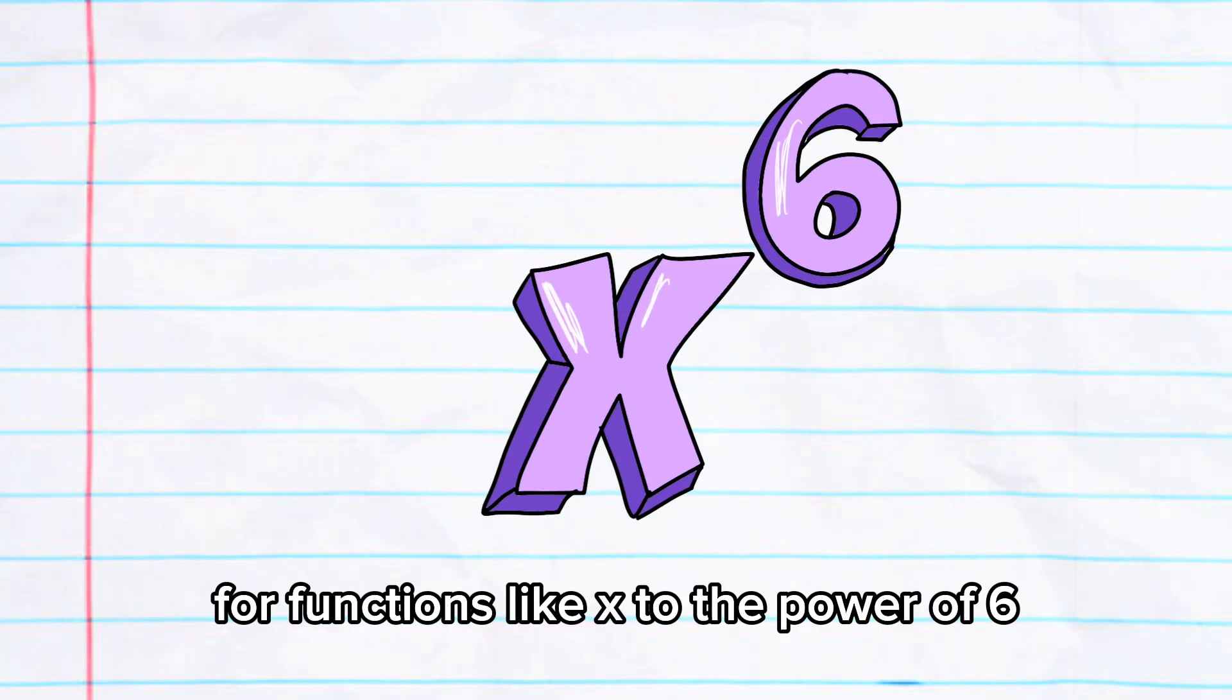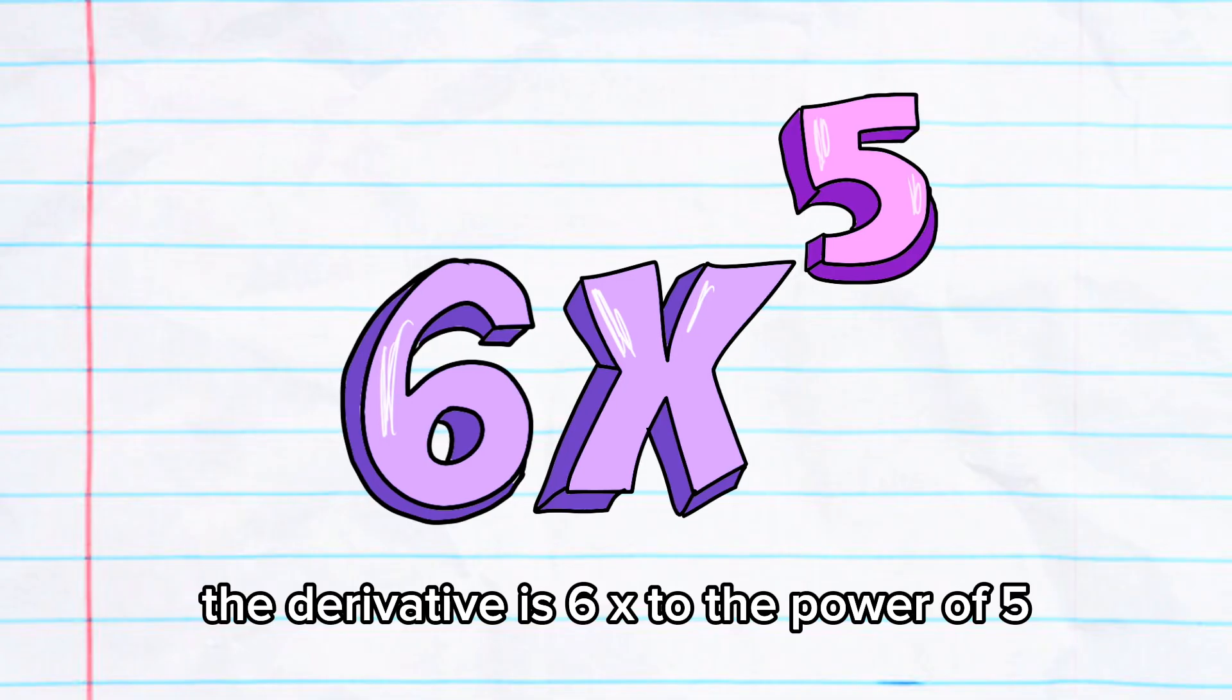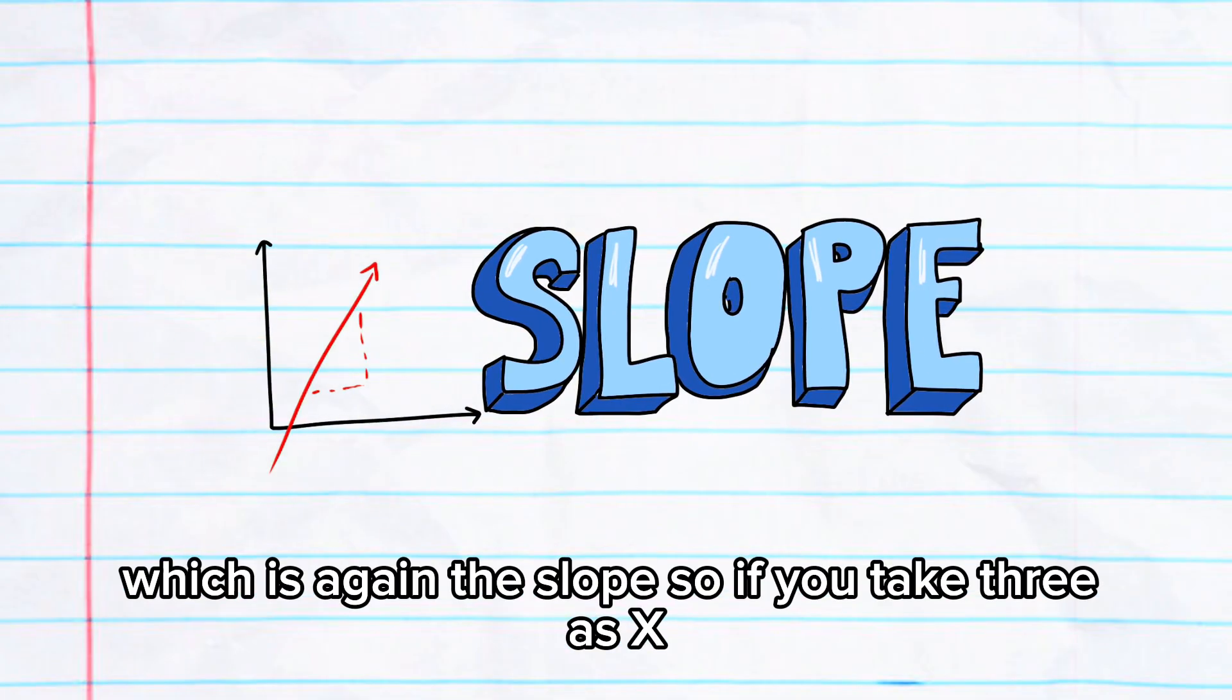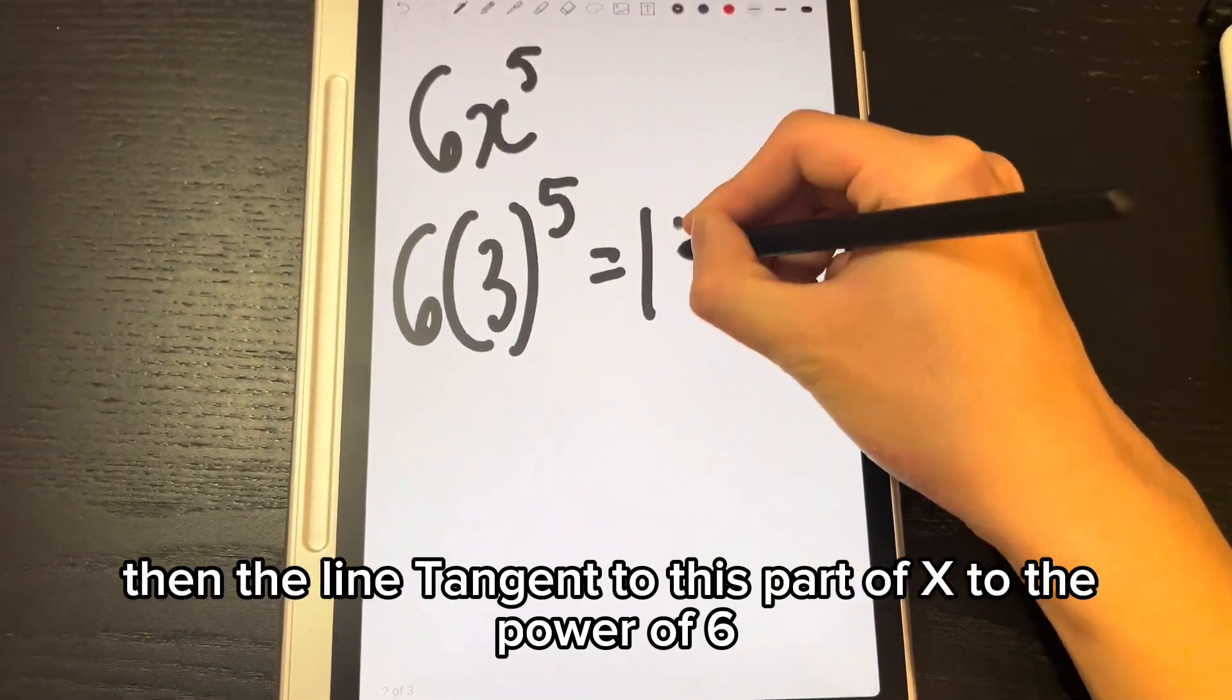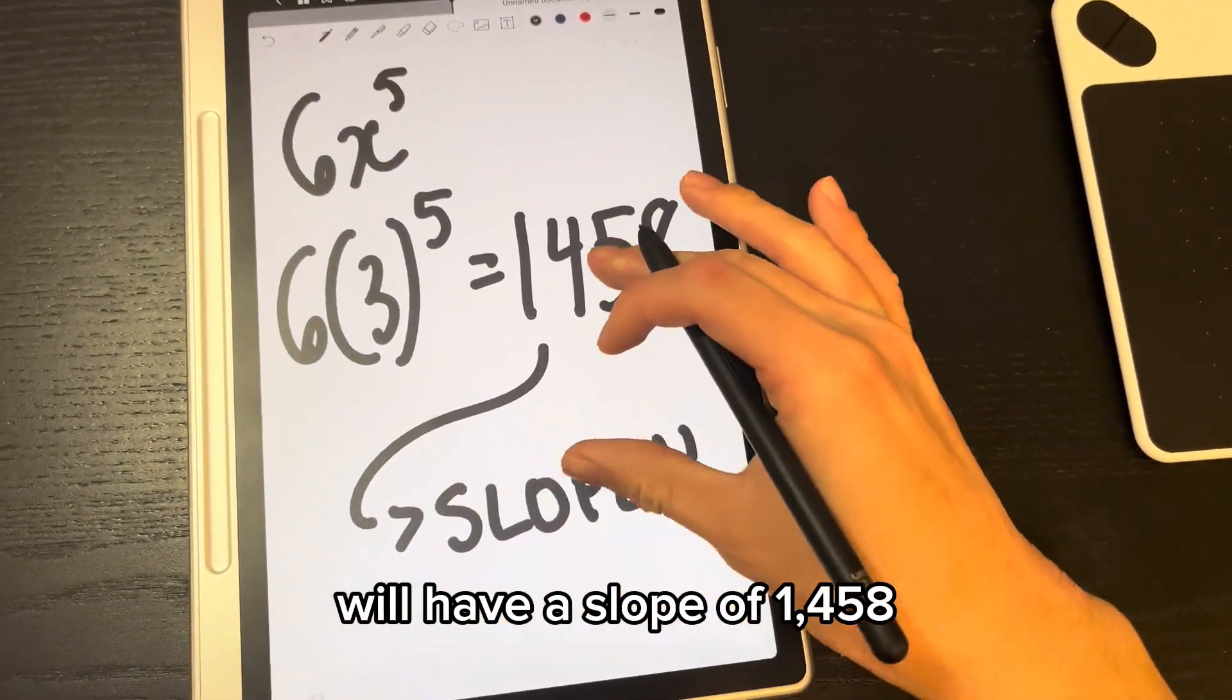Now, for functions like x to the power of 6, the derivative is 6x to the power of 5, which is, again, the slope. So if we take 3 as x, then the line tangent to this part of x to the power of 6 will have a slope of 1458.